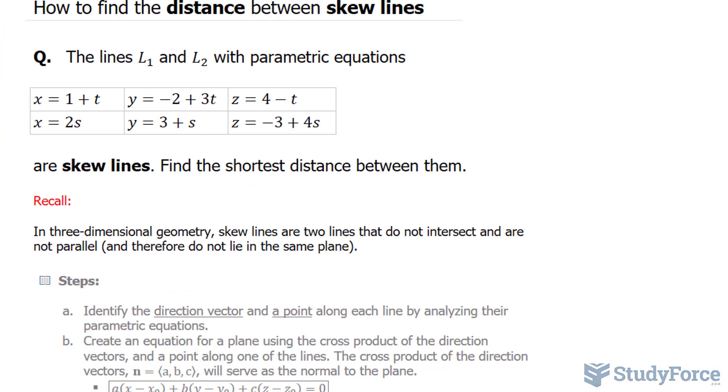So take a look at the first row. Those are the parametric equations for one line in 3D space, and we have to identify its direction vector. To find the direction vector we look at the coefficient of the scalar factor t in our case here. So the coefficient here is 1, therefore the direction vector, which I'll call A, has an x component of 1, a y component of 3, and a z component of negative 1.